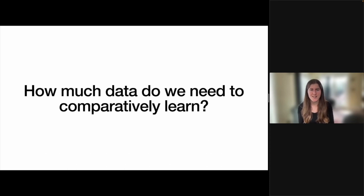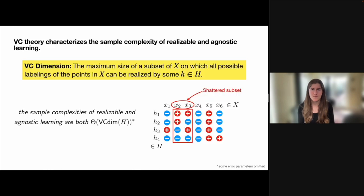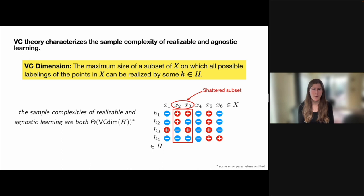Before getting into our results, I want to quickly review what is known about the sample complexities of realizable and agnostic learning, because these are two very related and well-studied problems. The sample complexities of both are characterized by a notion of expressiveness of their hypothesis class called the VC dimension. The VC dimension of a hypothesis class is the largest subset of points on which every possible labeling can be captured by some hypothesis in the class. When a subset has this property, we say that it is shattered by the hypothesis class.